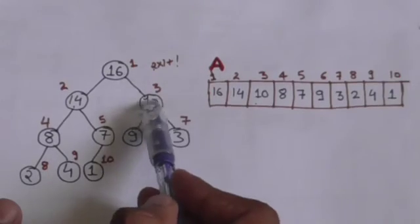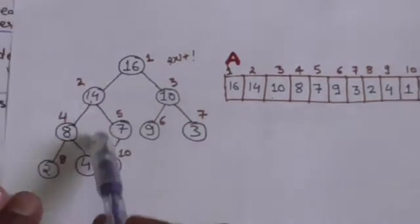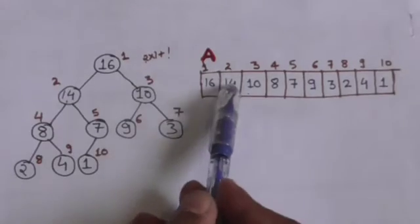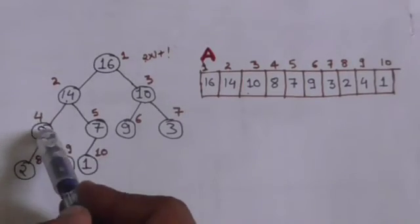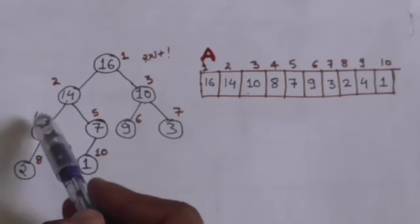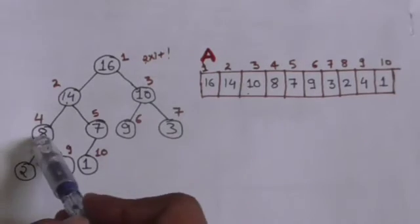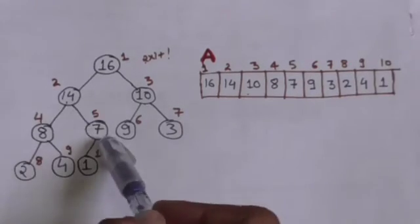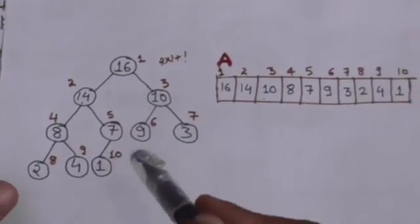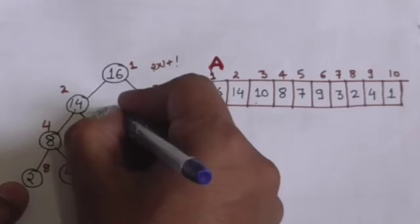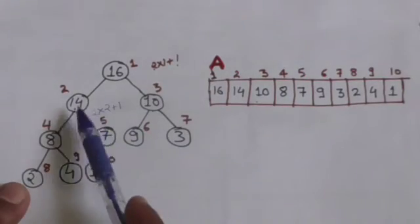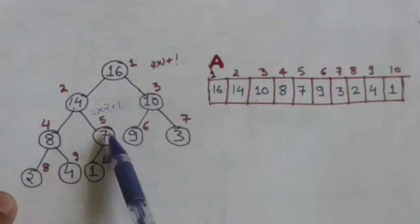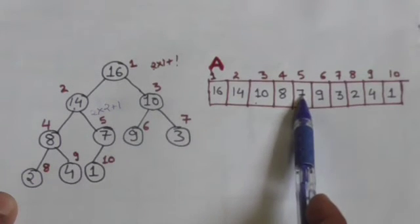Now take this node stored at index 2. Its left child will be stored at index 2×2 = 4 in the array. So element 8 is stored at index 4. Its right child will be stored at index 2×2+1 = 5 in the array. So element 7 is stored at index 5.